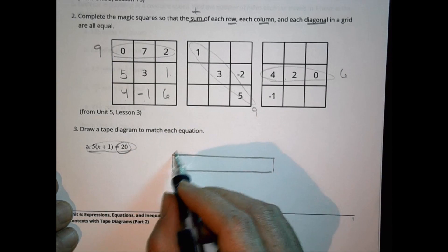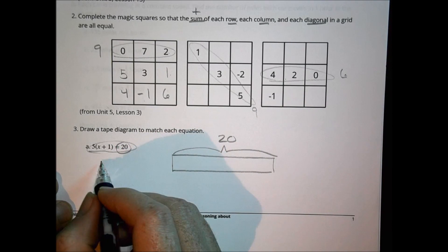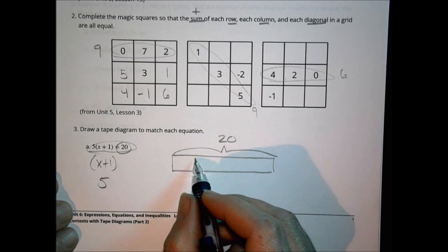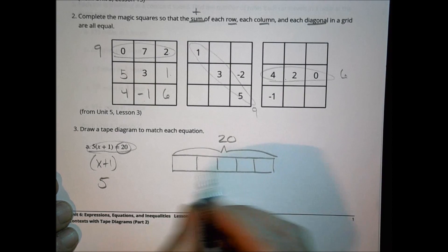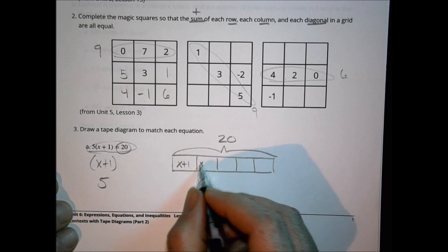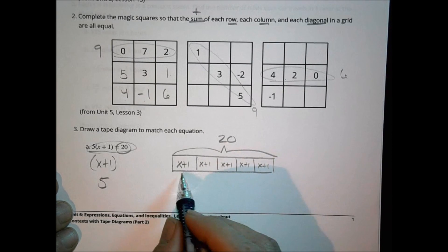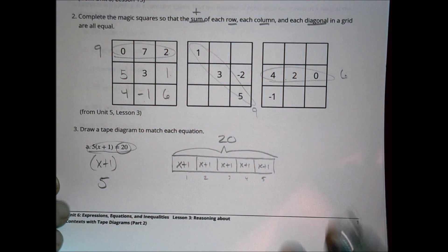For number 3, draw a tape diagram for the equation. For 5 times the quantity x plus 1 equals 20, I draw a bar totaling 20 and break it into 5 equal parts, each labeled x plus 1 — so x plus 1 appears 1, 2, 3, 4, 5 times. That's the tape diagram for that equation.